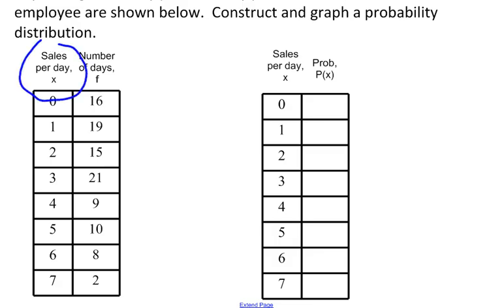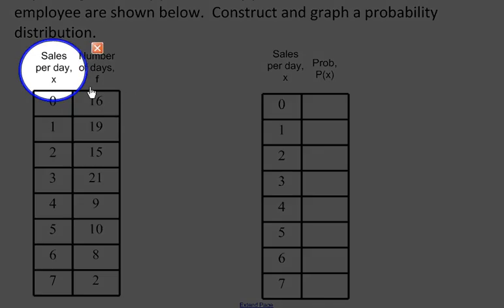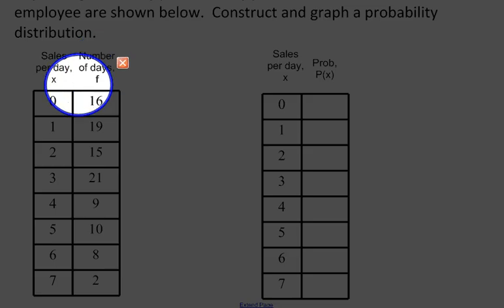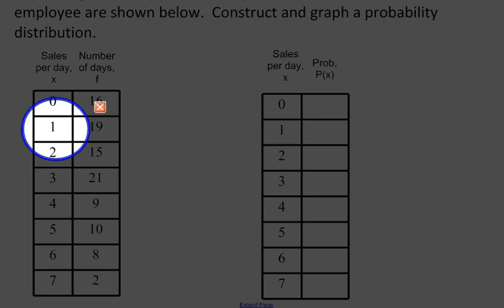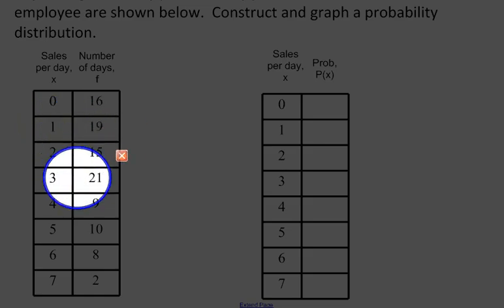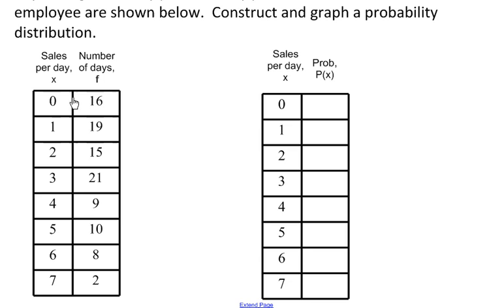We've got sales per day and then we've got the number of days. So there were 16 days where he sold zero. He had no sales at all. There were 19 days where he had one sale, 15 days where he had two sales, 21 days where he had three sales, and so on until we see the entire distribution. This was collected over a 100-day probationary period.